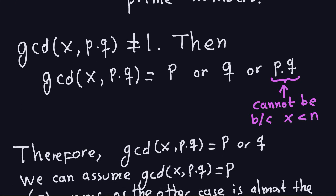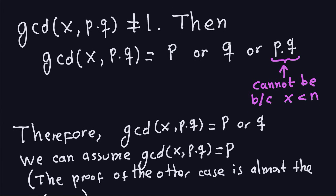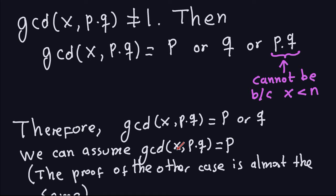So the GCD between x and pq is either p or q. We're going to assume that GCD(x, pq) equals p. It could also be q, but if you do the proof for p, the proof when you assume the GCD equals q is exactly the same — you just change the letter p to the letter q. So we can safely assume GCD(x, pq) equals p.